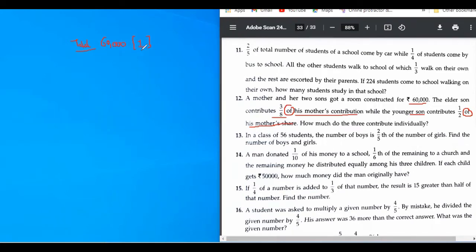So, total is always 1. So, let us divide the total value into three parts, because three people have contributed.